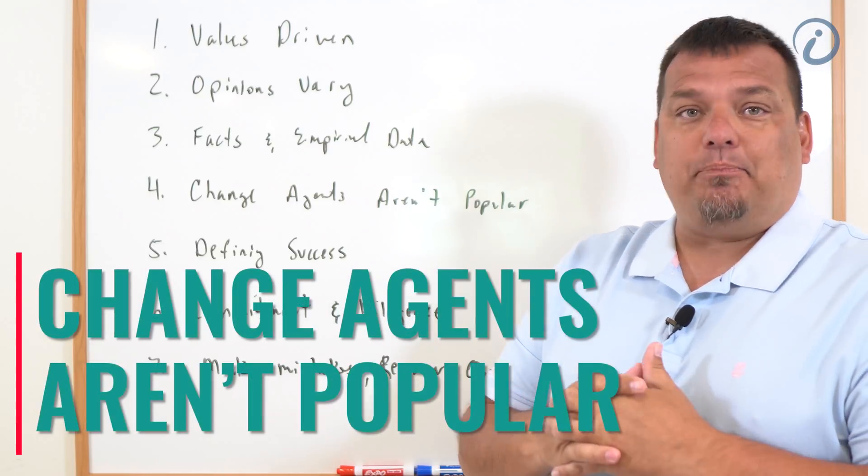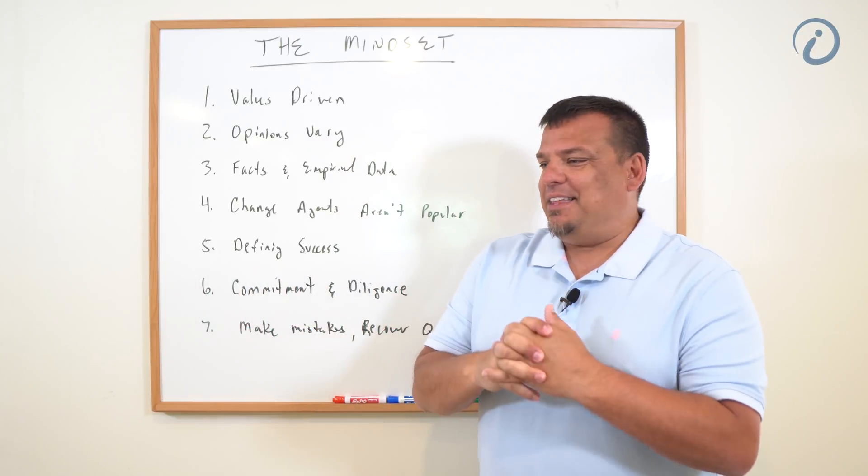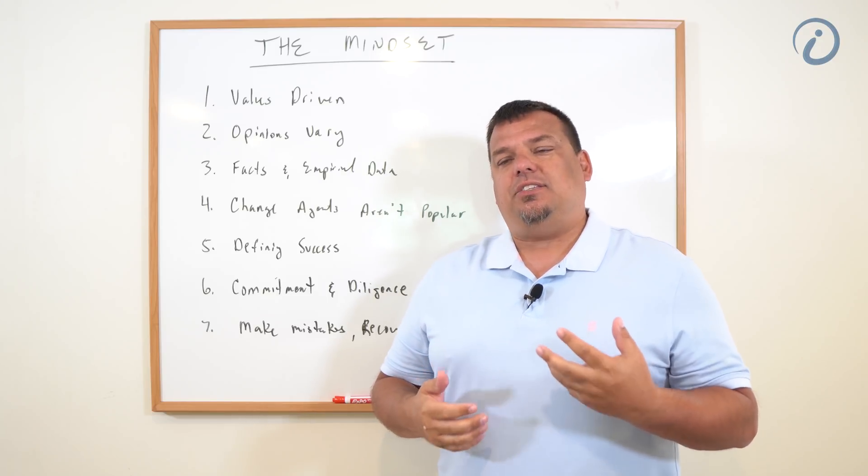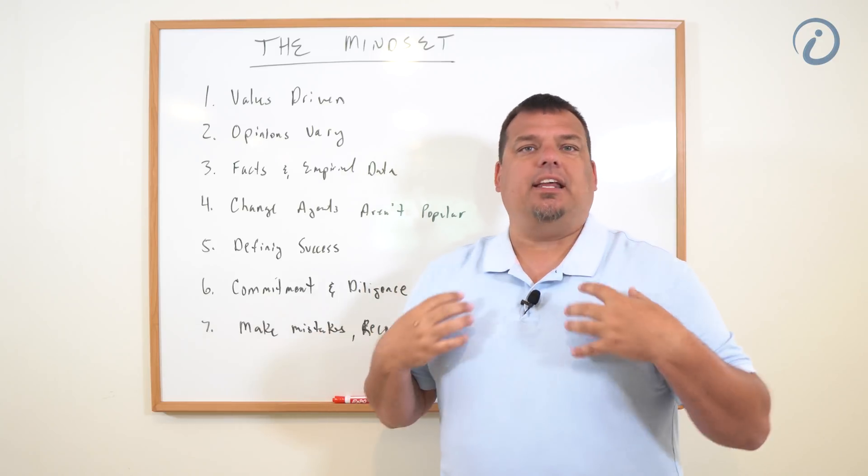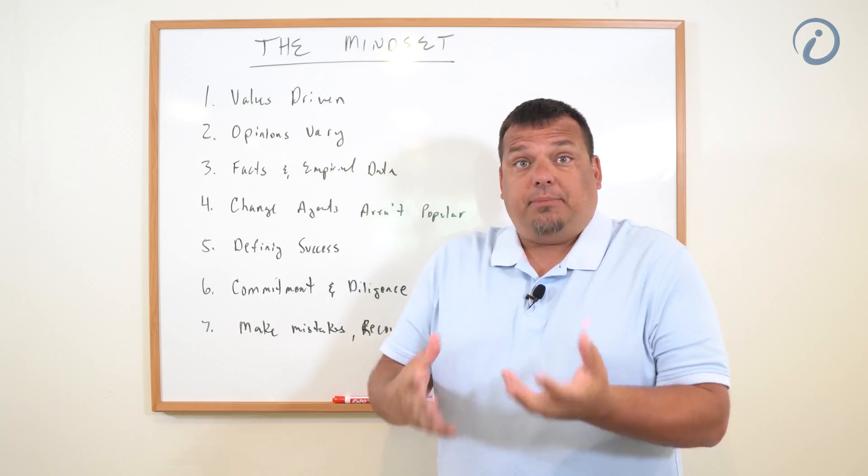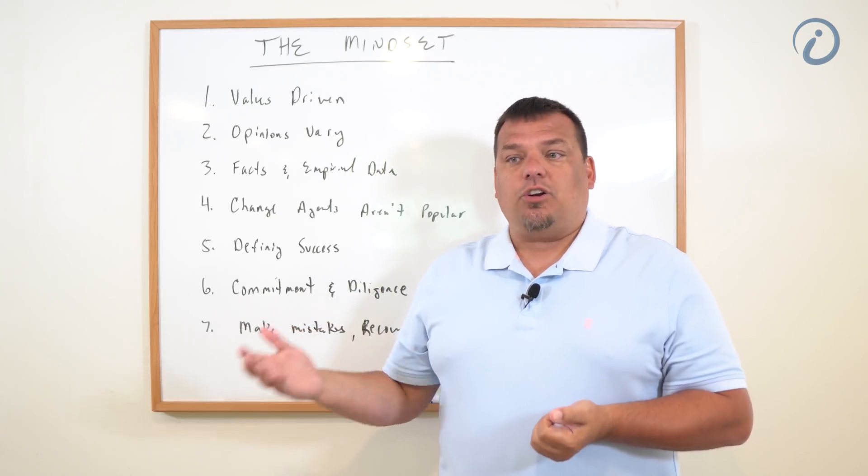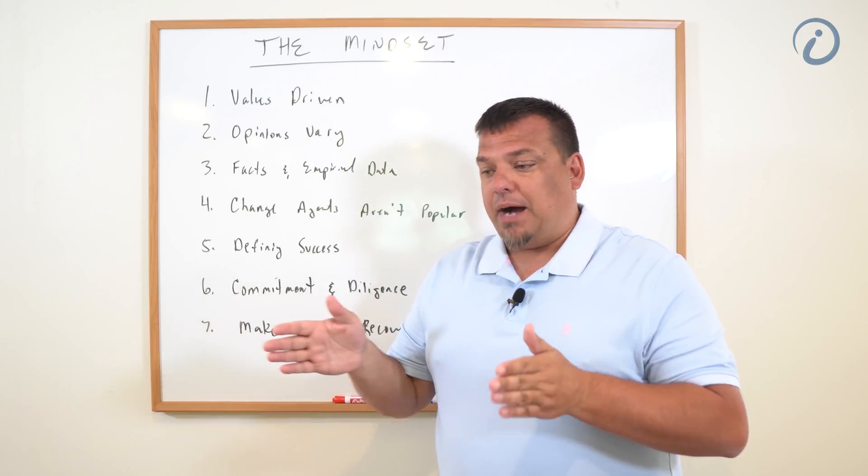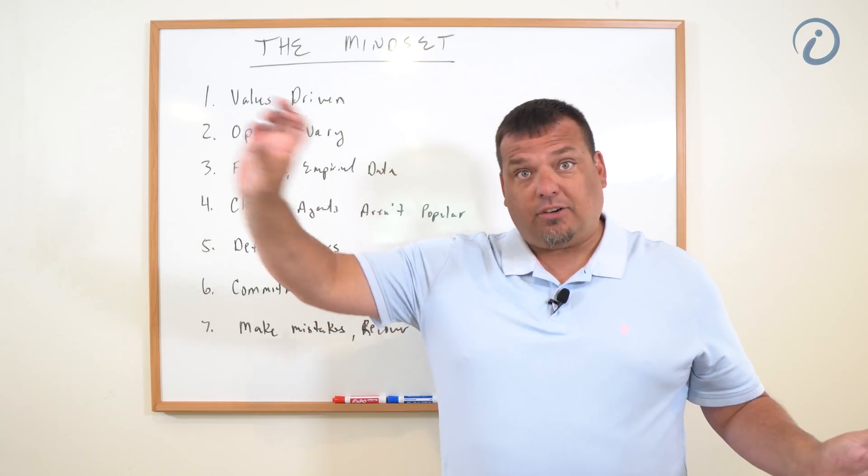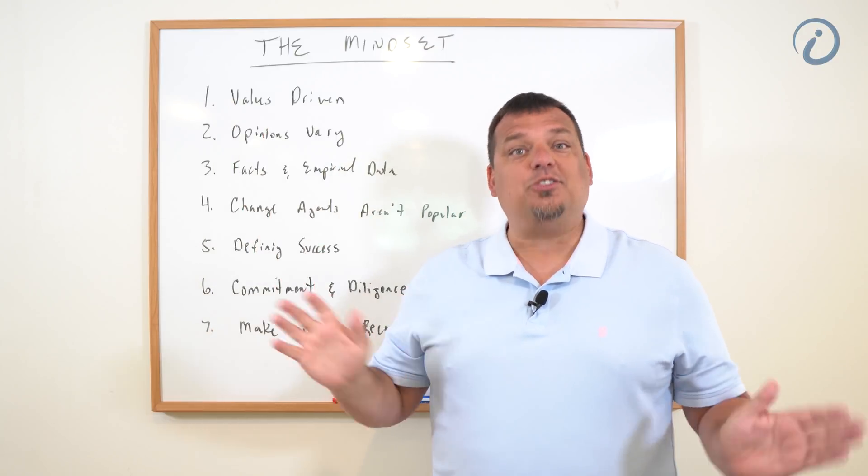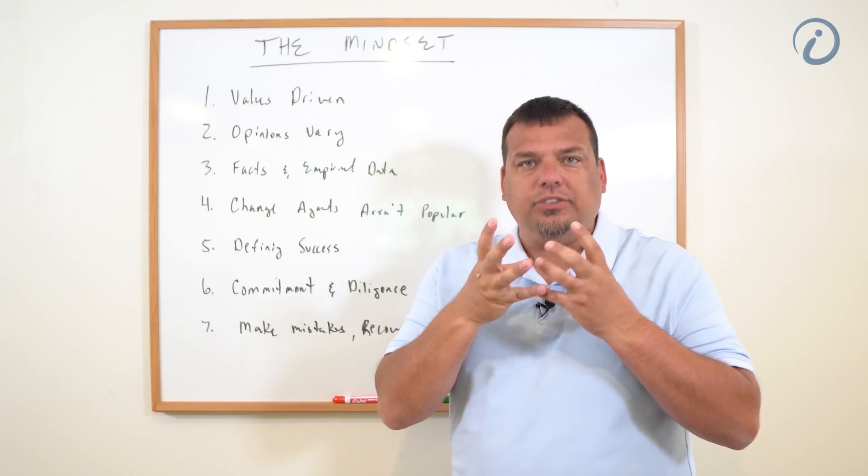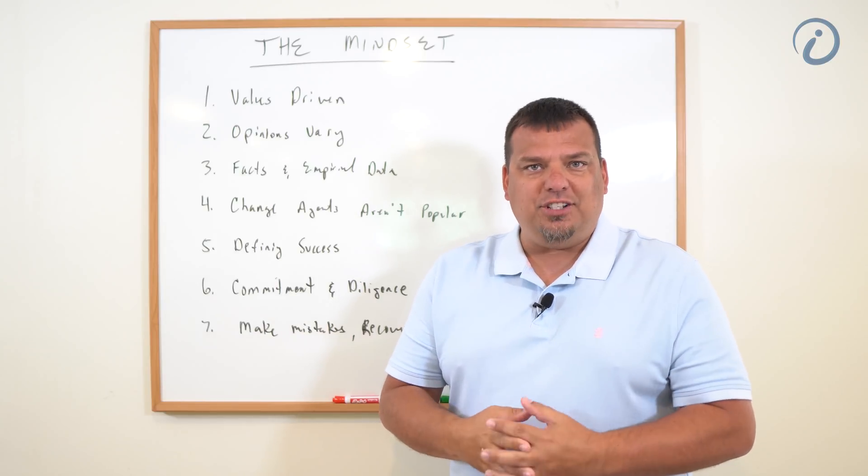Number four, change agents aren't popular. You have to understand that if you're going to innovate, if you want to be an agent for change, at the end of the day we are trying to get manufacturers to migrate from industry 3.0 to industry 4.0. That means we need their integrators, their OEMs to jump on board. You will not be popular if you're an agent for change.